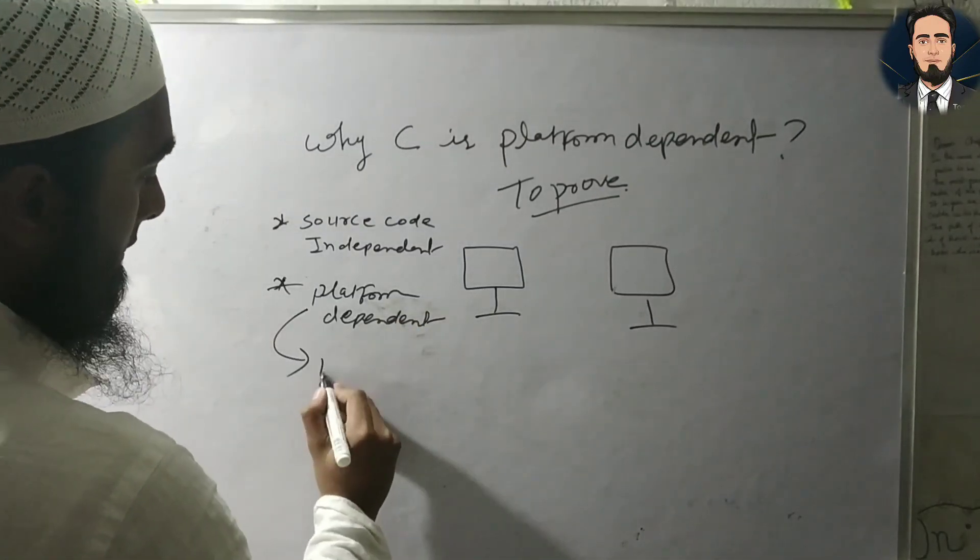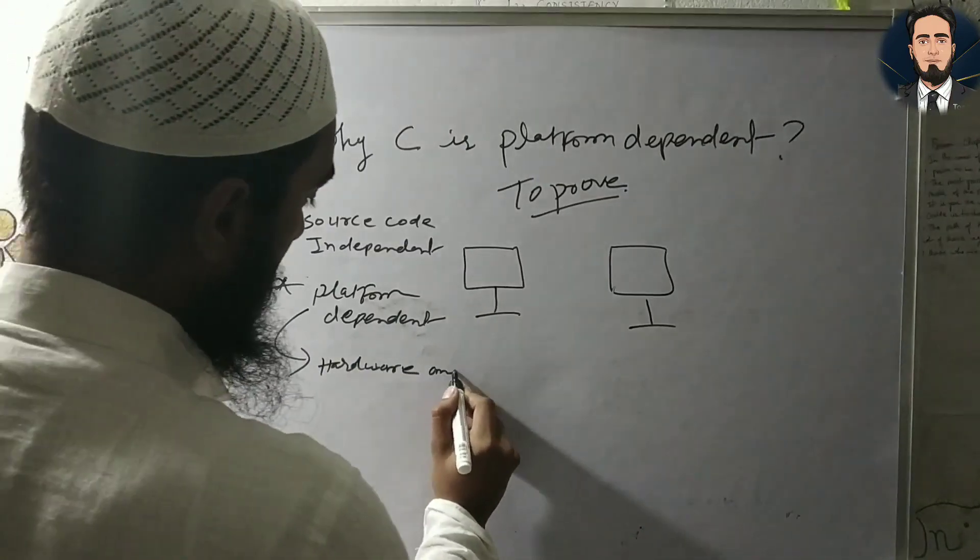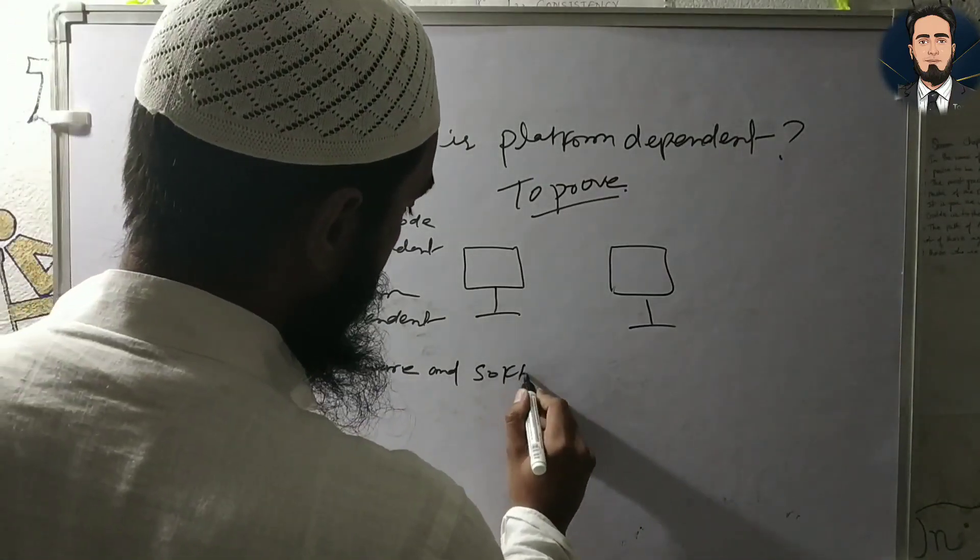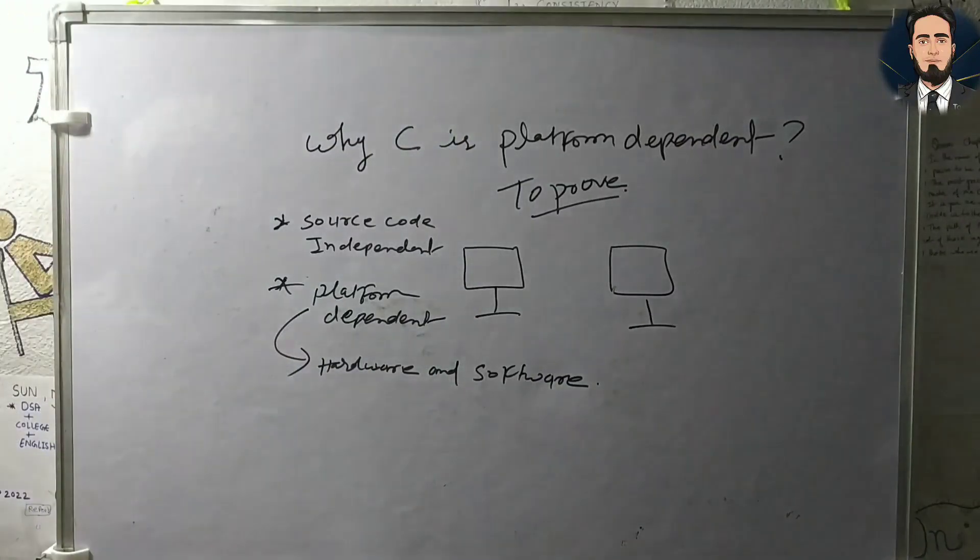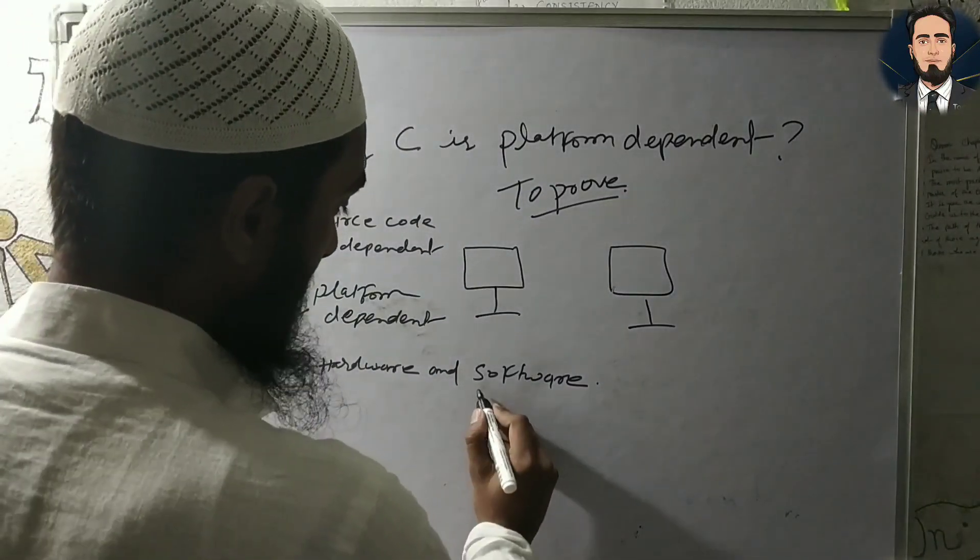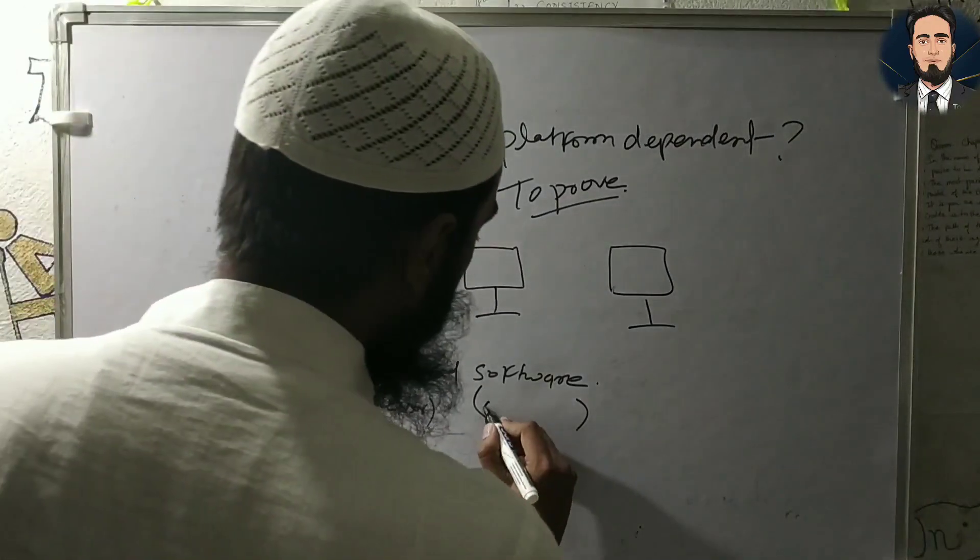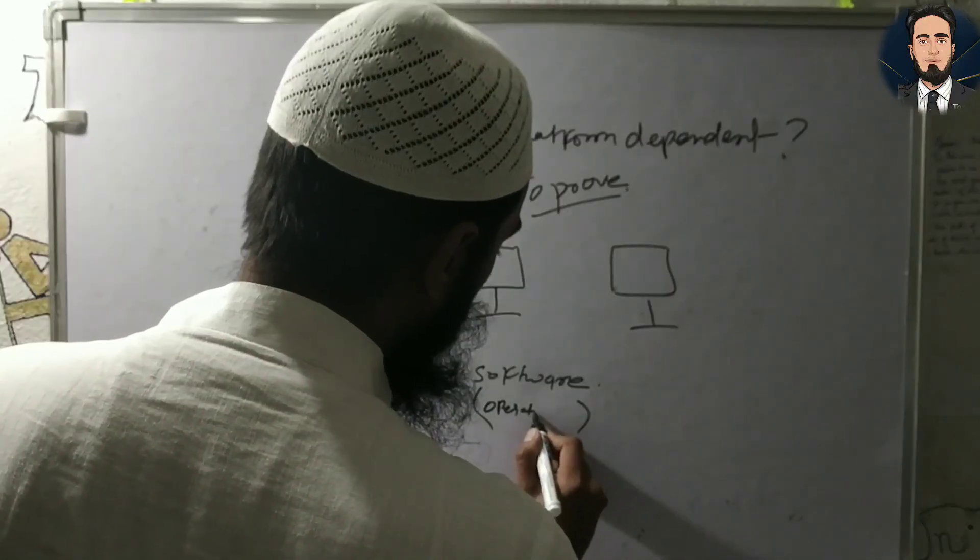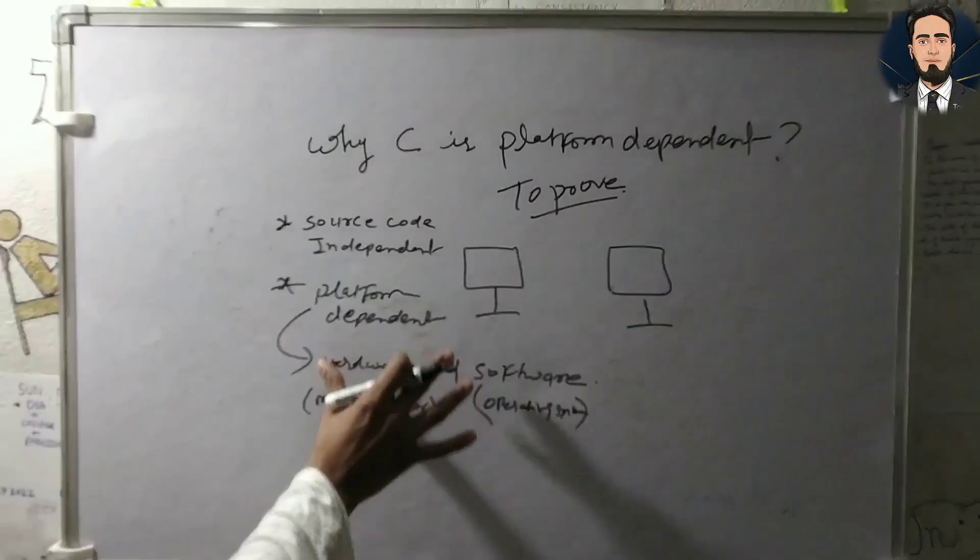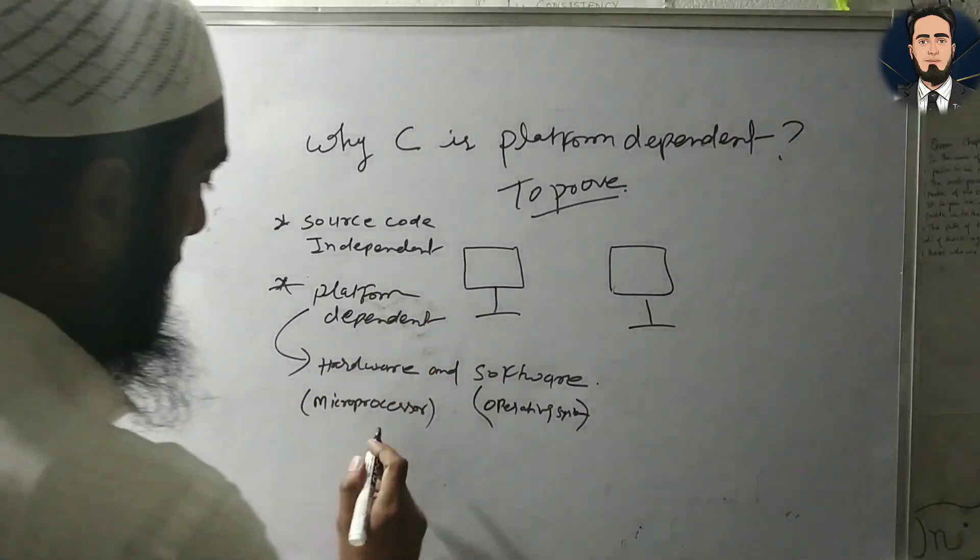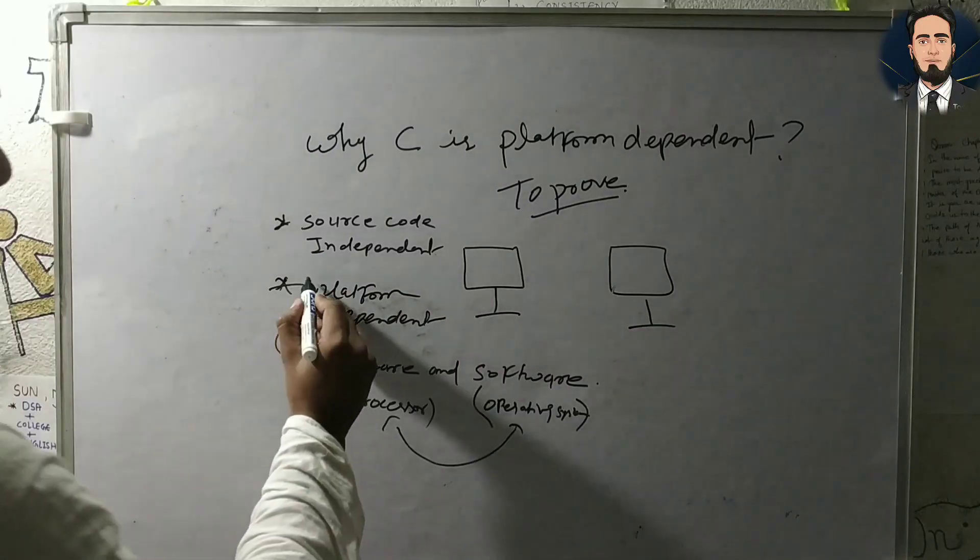Platform is a combination of hardware and software. Software means operating system. If you have two things like microprocessor and operating system, then we can say this is a platform.